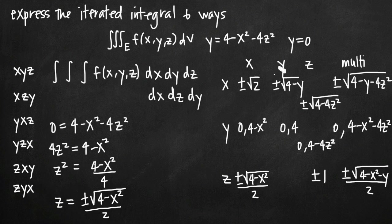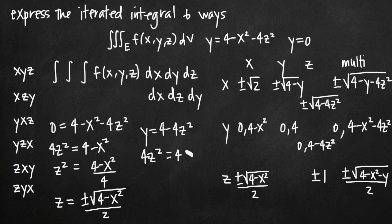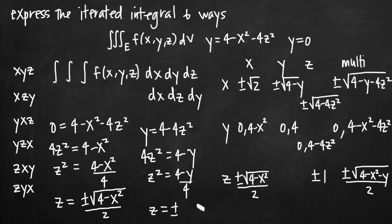For z in terms of y, I plug in 0 for x and get y = 4 - 4z². Adding 4z² and subtracting y: 4z² = 4 - y, so z² = (4 - y)/4. Taking the square root, z = ±√(4 - y) / 2, because taking the square root of 4 gives 2. So my limits for z in terms of y are ±√(4 - y) / 2.